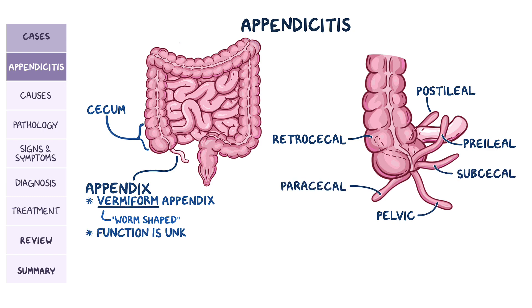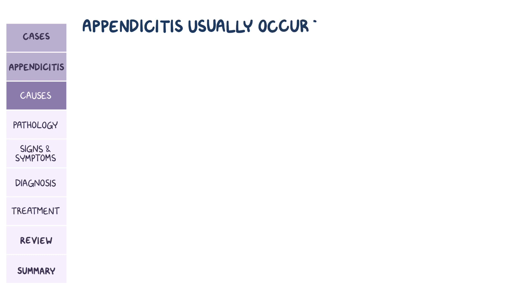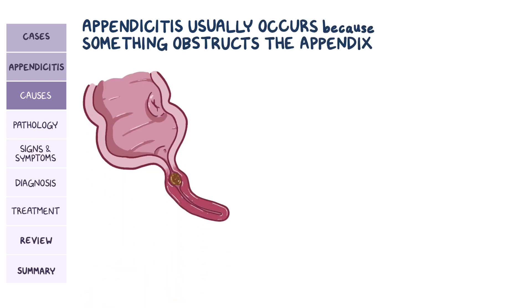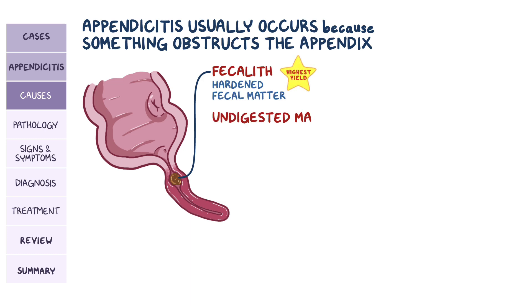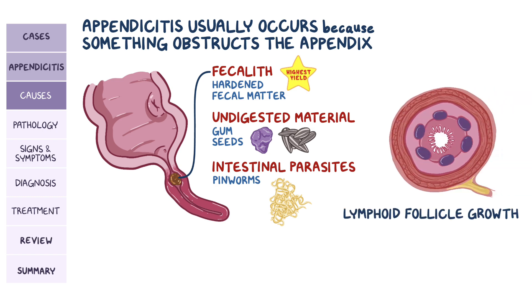Its function is actually unknown, though some theories suggest it might be a safe house for the gut flora and that it plays a part in the lymphatic and immune system. Appendicitis usually occurs because something gets stuck and obstructs the appendix. That something could be a fecalith, which is a hardened lump of fecal matter, a piece of undigested material like gum or seeds, or even a clump of intestinal parasites like pinworms. Another cause of obstruction could be lymphoid follicle growth, also called lymphoid hyperplasia.